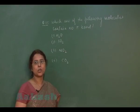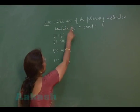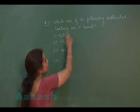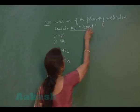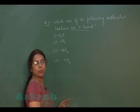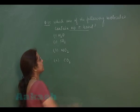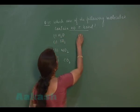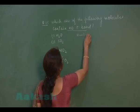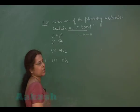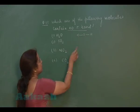Let us see the question number 35. Which one of the following molecule contains no pi bond? Whether a pi bond is present or not, it can be concluded on the basis of their structure. If it is water molecule, hydrogen oxygen hydrogen, there is only 2 sigma bond.